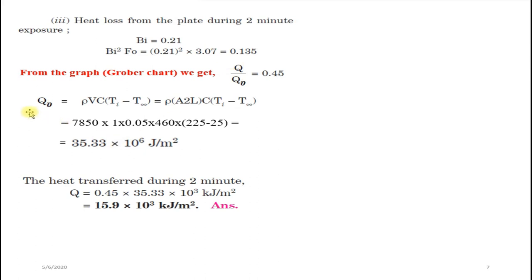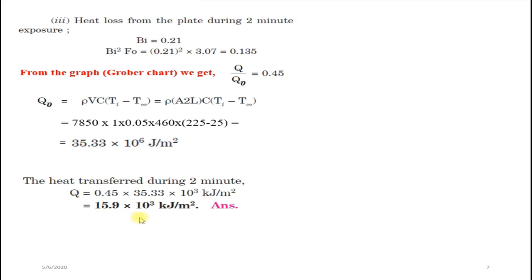Calculating q₀: q₀ = 7850 × 1 × 0.05 × 460 × (225 − 25) = 35.33×10⁶ J/m². Here area is taken as 1 m² and 2L = 0.05 m as thickness. Then q = 0.45 × 35.33×10³ kJ/m² = 15.9×10³ kJ/m². That is the heat loss from the plate during 2 minutes of exposure.